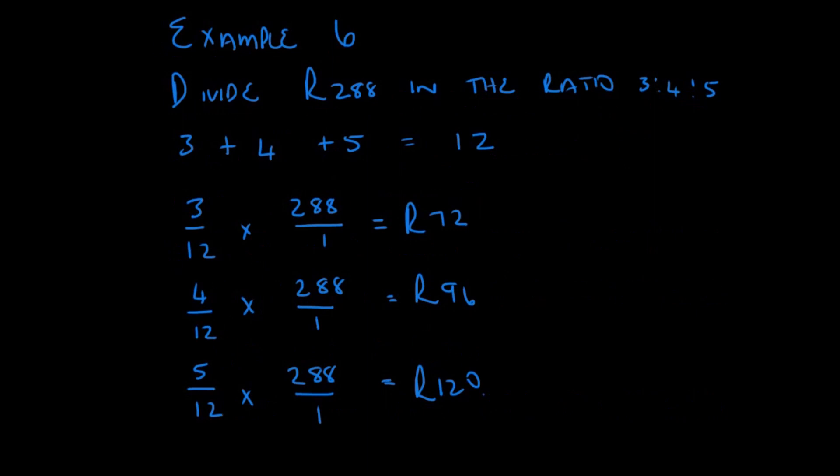Let's look at example 6. Example 6 says divide 288 Rand in the ratio 3 as to 4 as to 5. Now, when we have these types of ratios, what we are required to do is add 3, 4, and 5 together.